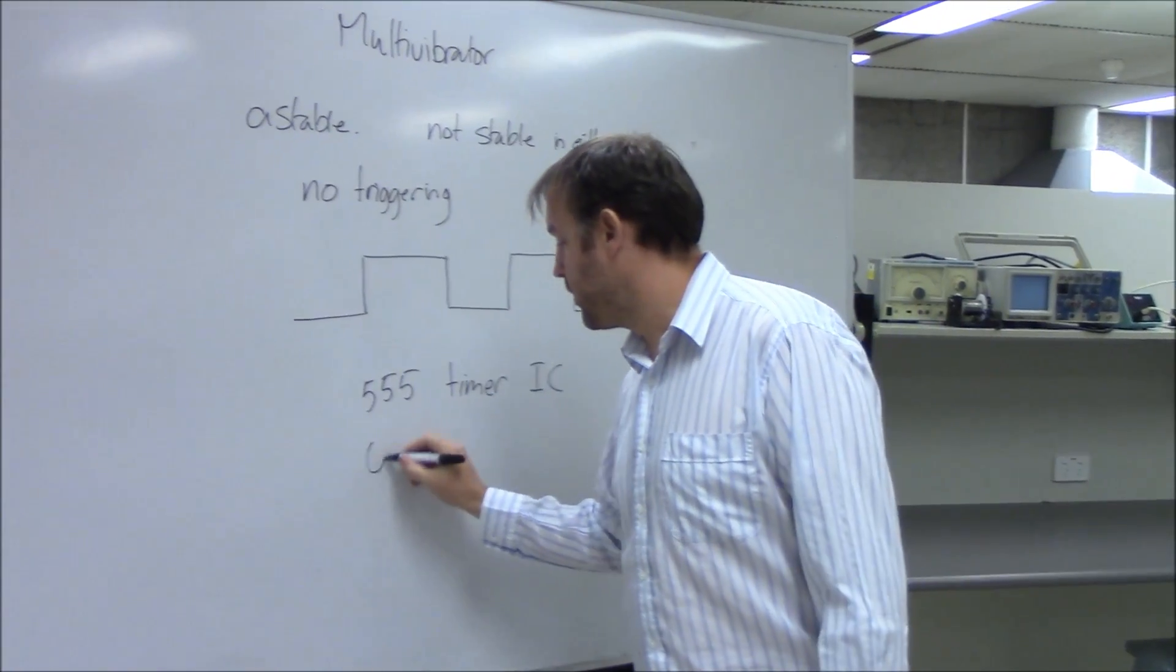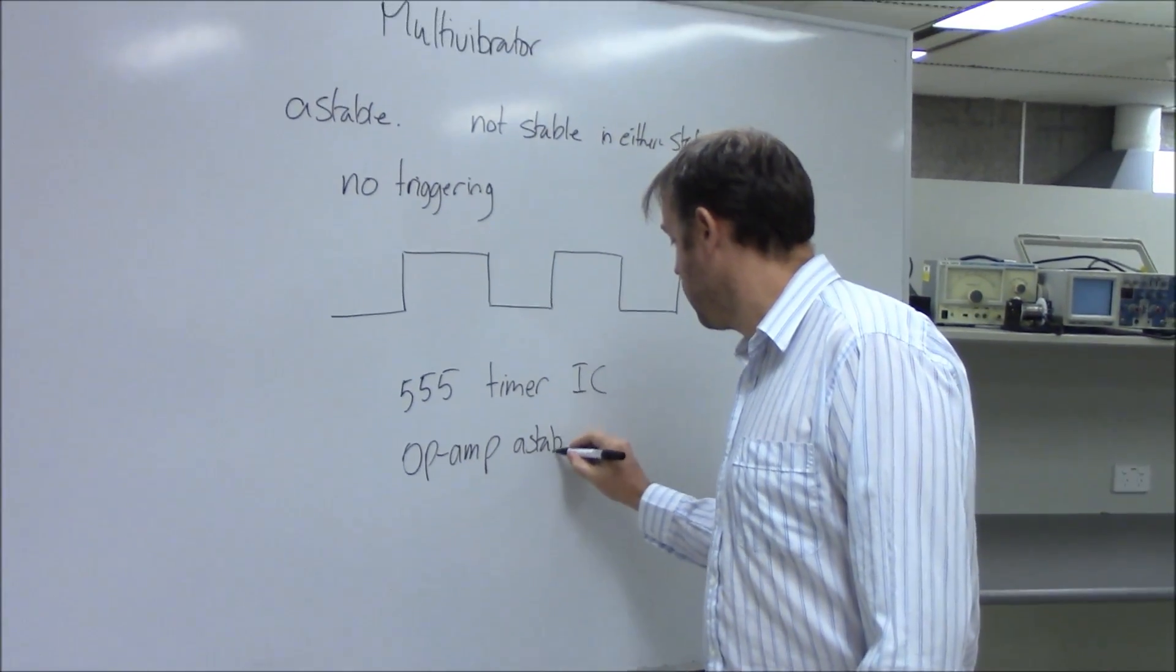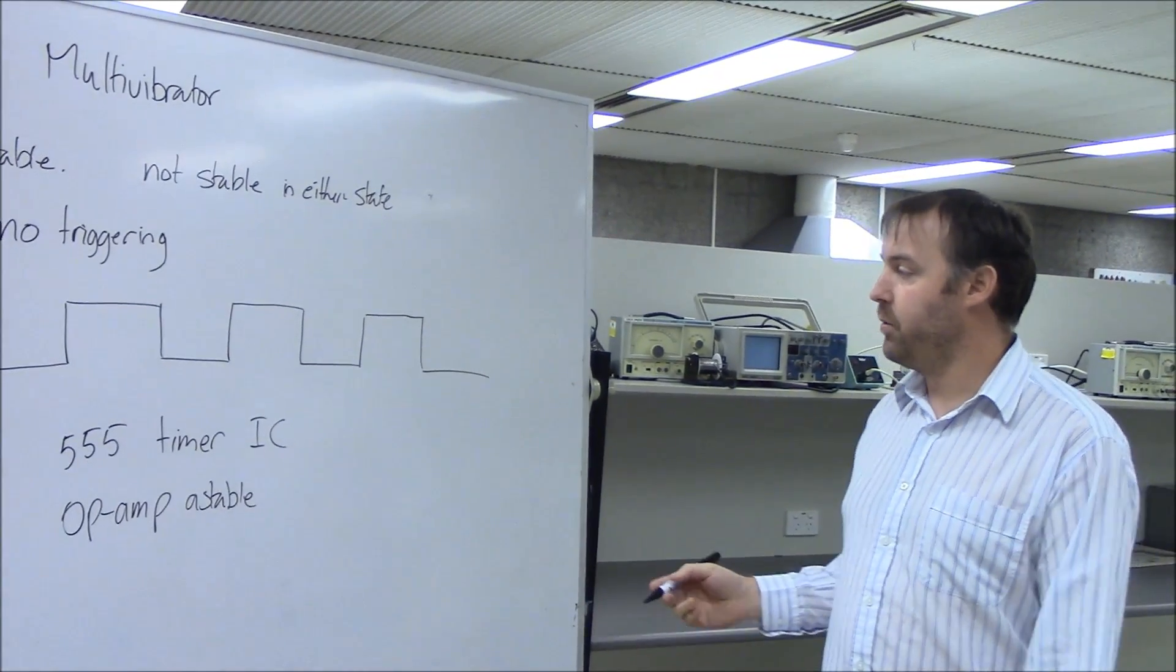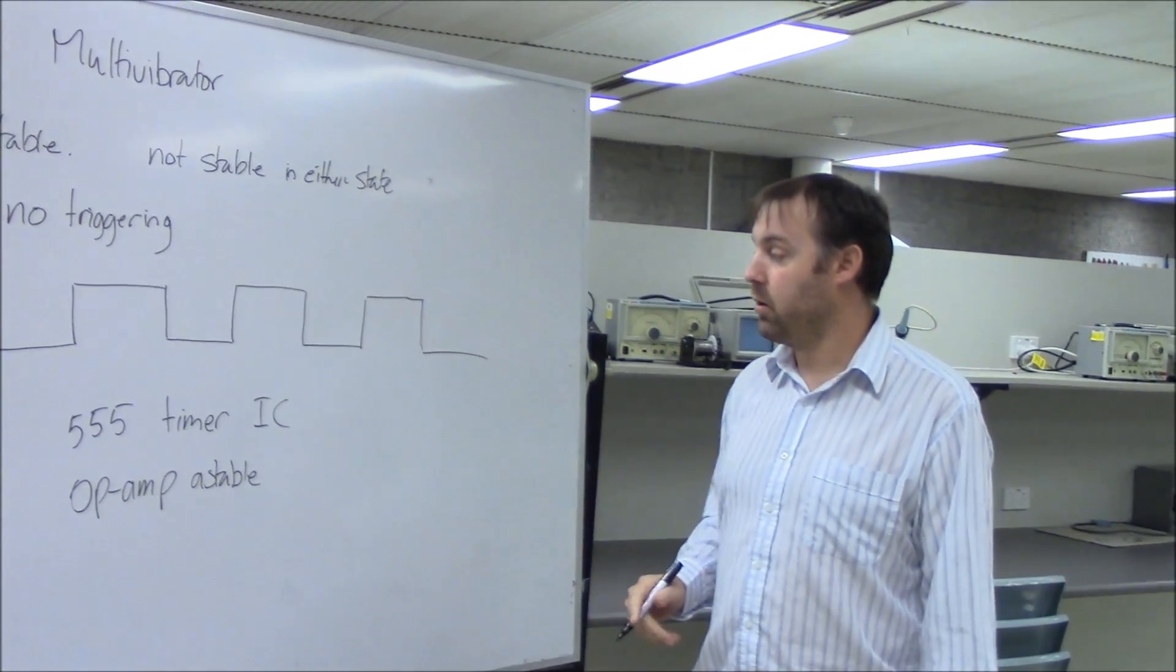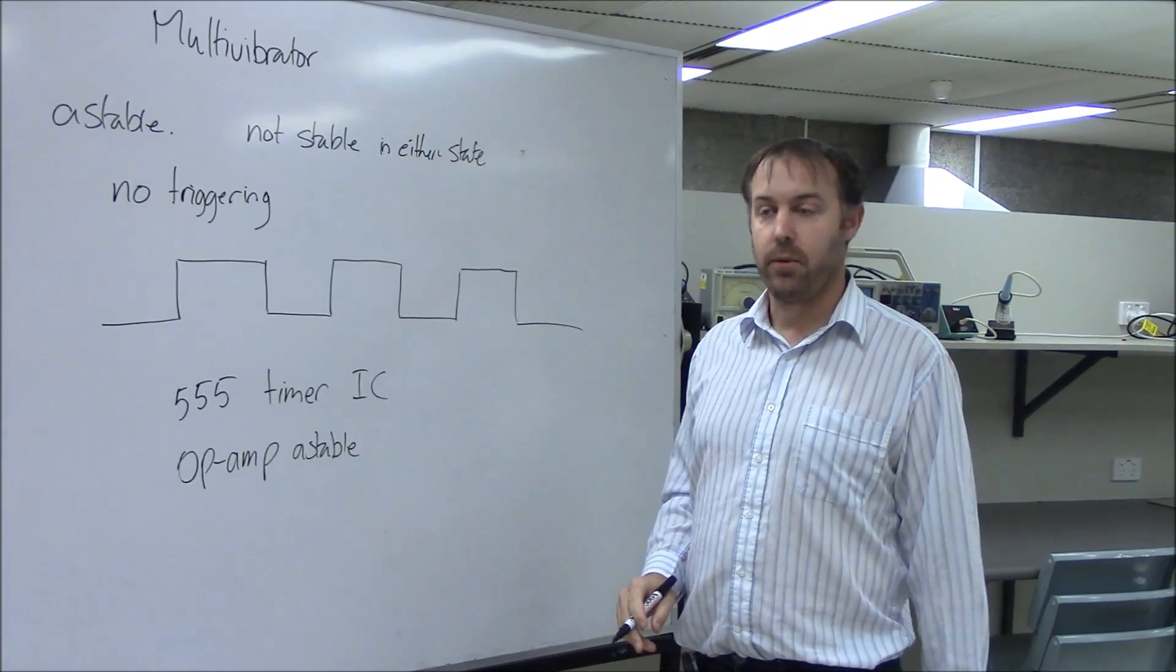You can use op-amps. You can wire an op-amp to be an astable. Later on when we look at the op-amps in the analog circuits we'll actually look at how to create this and the operation of one.